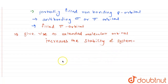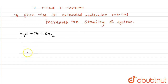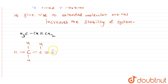Now, considering the example of a propene molecule, the structure of propene is CH₃ — CH = CH₂. The expanded form would be H-H-H on the first carbon, then C, then double bond, then CH₂.